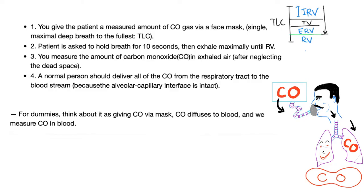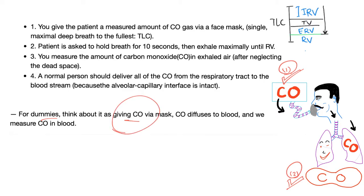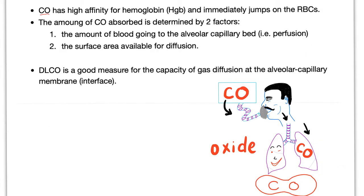A normal person should deliver all of the CO from the respiratory tract to the bloodstream — it has to jump on the hemoglobin. Hemoglobin has a huge affinity for carbon monoxide, even better than oxygen. If the patient's lungs are normal, all of the carbon monoxide will jump from the alveoli to the red blood cells. For simplicity: we give CO via mask and measure the amount of CO entering, then measure the amount of CO on the red blood cells' hemoglobin. If you understand this, you'll understand increased, decreased, and normal DLCO.